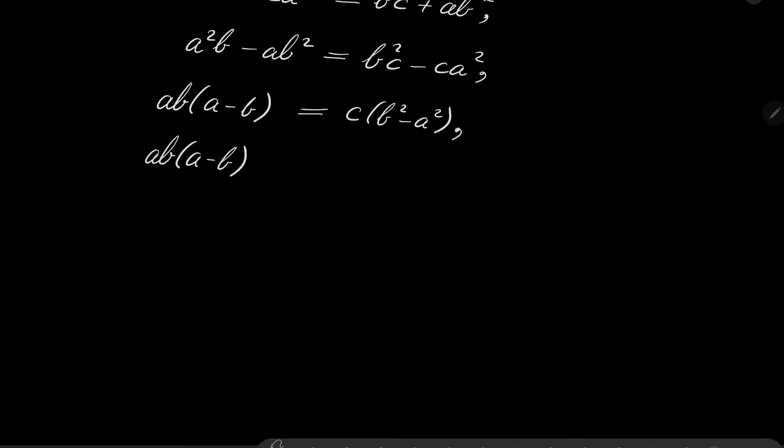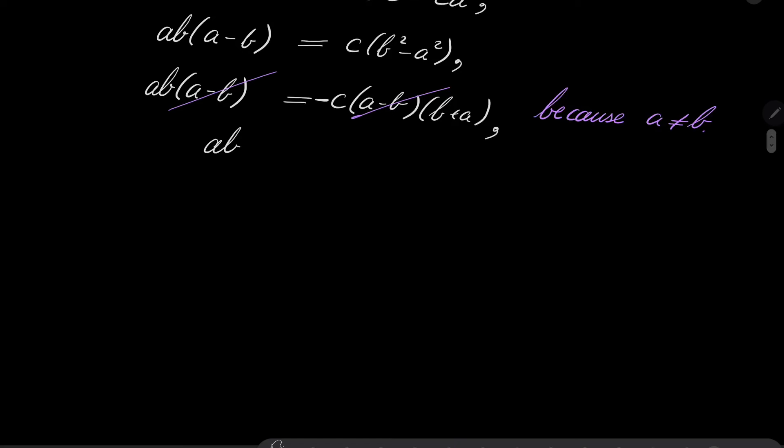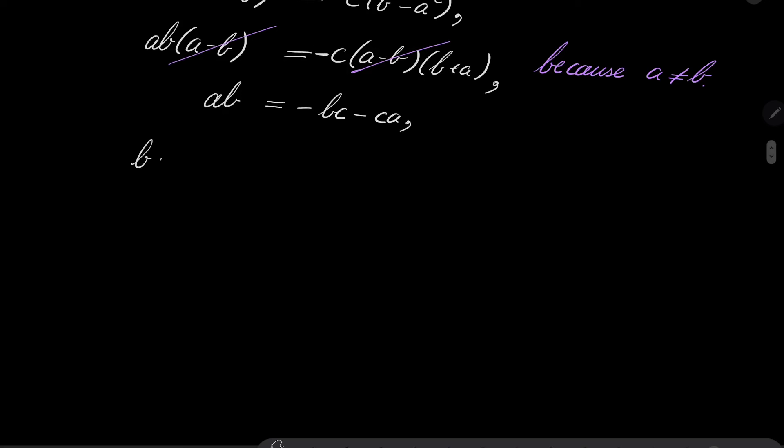But this is equivalent to saying that c(b - a)(b + a) equals the left hand side. And now I will do a trick - I will put minus right here and change the order in this parenthesis to a - b. Now crucial step: since we assume that a, b and c are distinct, we can cancel this parenthesis because a is not equal to b. So we are left with ab = -c(b + a). Let's put everything on the left hand side: bc + ca + ab = 0.